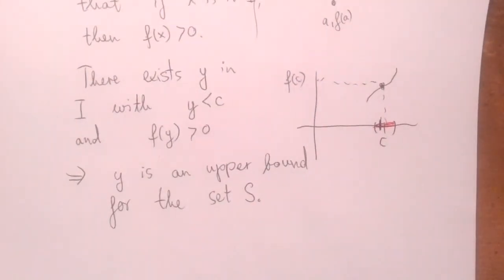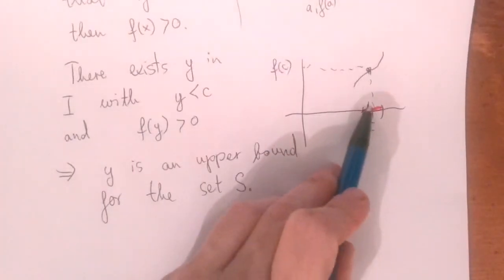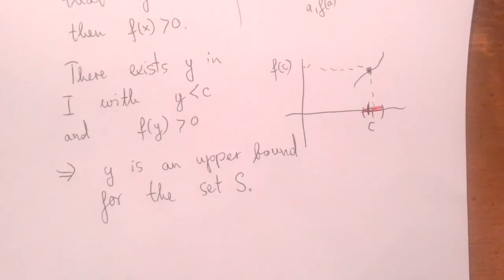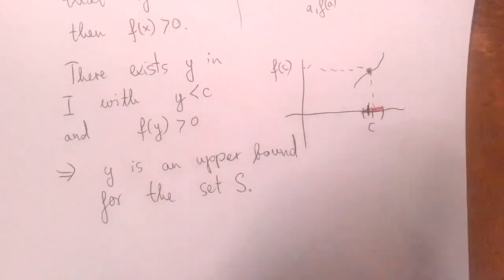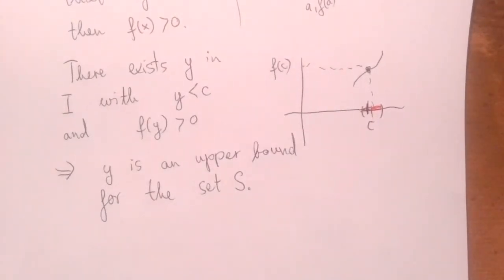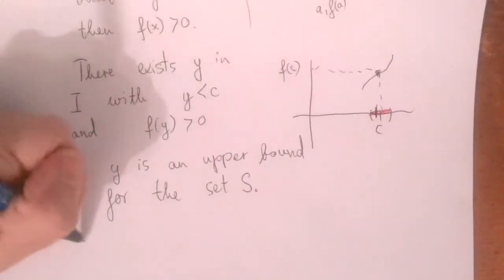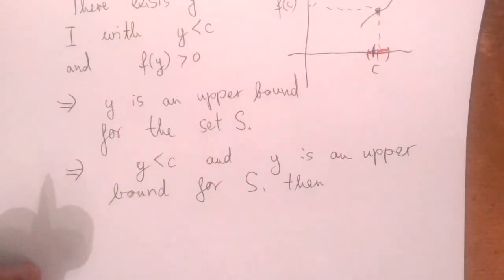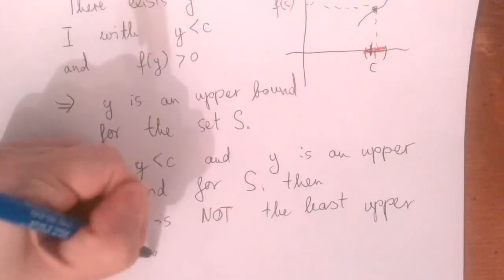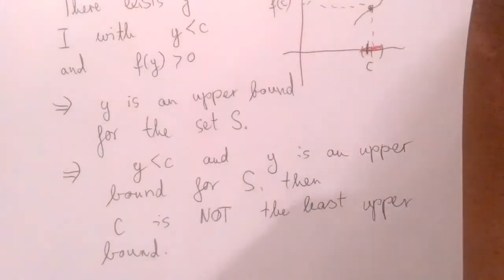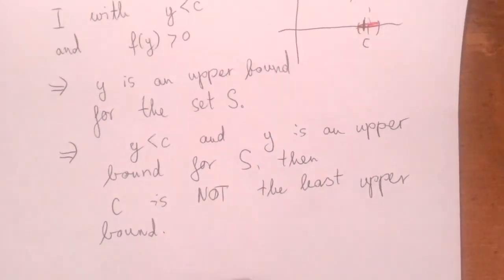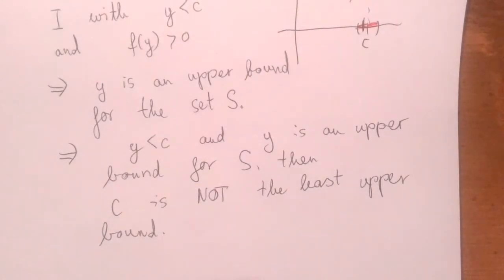There exists y in the interval i that is less than c, and this y is an upper bound for our set S. Because c was an upper bound, every number in S is less than c. But between y and c the function is all positive, which means all elements in S are also less than y. Nothing after y can belong to S, because we are safely far away from negative values. Therefore, if y is less than c and y is an upper bound for S, then c is not the least upper bound. But we agreed c is the least upper bound, so f of c cannot be positive.